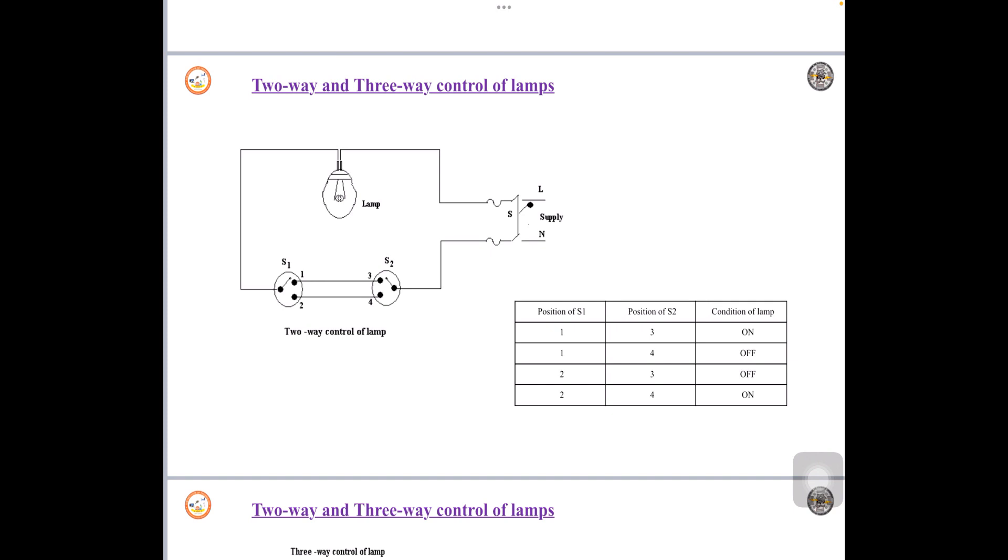S1 being at 1, the position of S2 being at 3. Now what happens, if you observe the circuit, there is a continuity. S1 to 1, 1 to 3, 3 to the other end of the S2, from the other end to neutral. So obviously the lamp will glow here, so condition of the lamp is on.